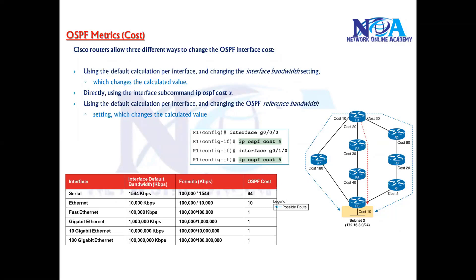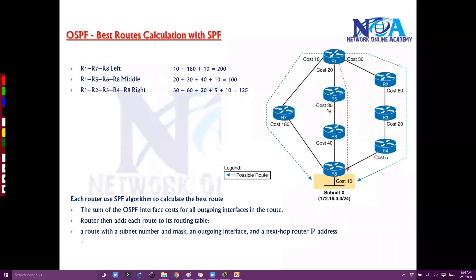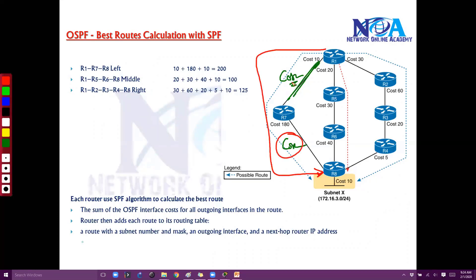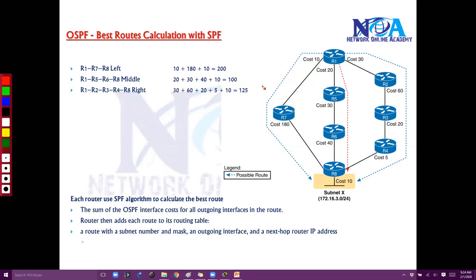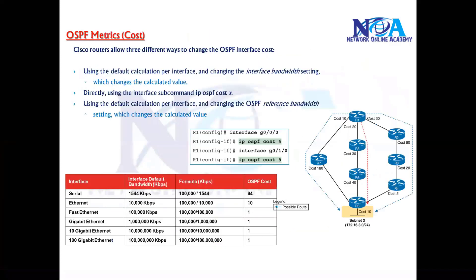The next thing we'll try to understand is the OSPF cost of matrix. Like previously I discussed an example where each and every interface derives the cost, and it calculates the overall cost to reach a particular destination based on the sum of all the cost values. But now the question is: how are these cost values derived? What is the formula or what is the process behind this?